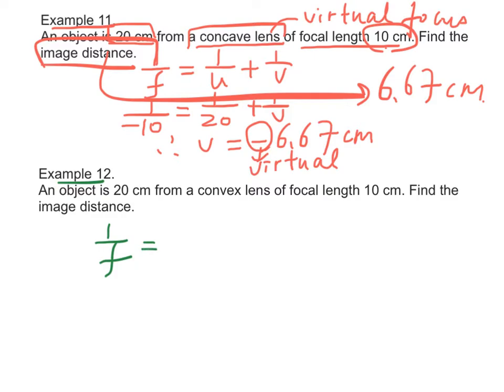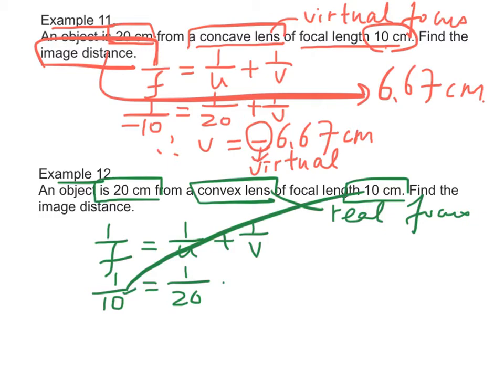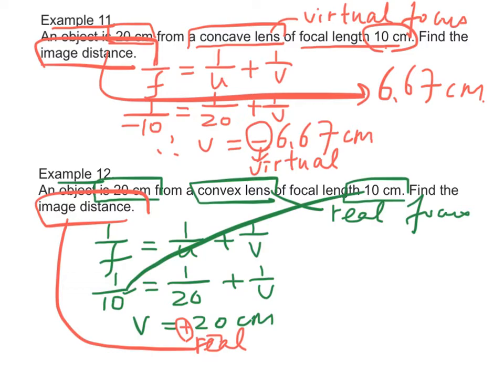Example 12: By the lens formula 1/f = 1/u + 1/v, the object distance is 20 cm, so u = 20 cm. Since it's a convex lens with real focus, we substitute focal length f = 10 cm. Solving the equation gives v = 20 cm. It is positive, which means the image is real, with image distance equal to 20 cm.